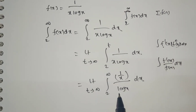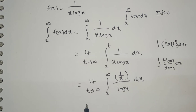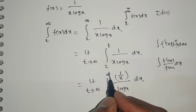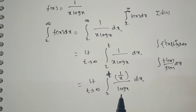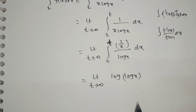Now observe: if we consider the denominator as f of x, that is f of x equals log x, then f-dash of x equals 1 by x. So the derivative of the denominator is in the numerator. Therefore the integral evaluates to log of log x, with limits from 2 to t.